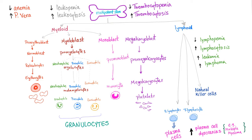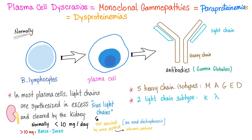Normally you have some free light chains in the urine, but they are less than 10 milligrams per day. In multiple myeloma, however, they are more than 10 milligrams per day, and we call them Bence Jones proteins. They are not detected by urine dipstick but can be detected using electrophoresis and immunoelectrophoresis.